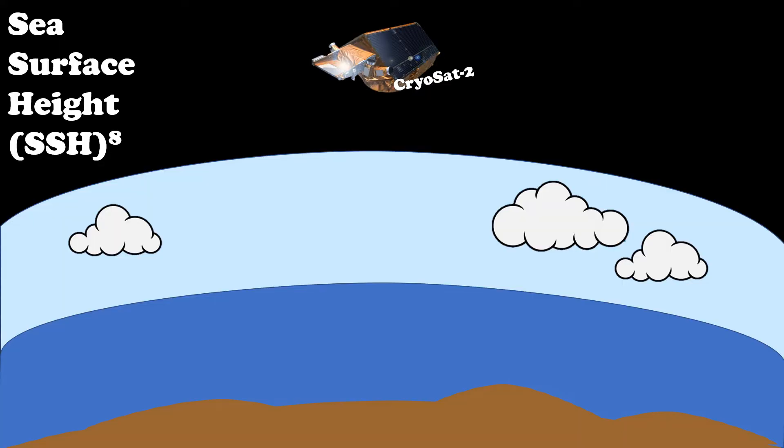So what can we measure using altimetry? One of the things we can measure is sea surface height. This is measured with reference to a surface called the ellipsoid. It does not consider the natural undulations of the earth but rather is a rough ellipsoidal approximation of the earth.